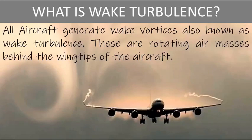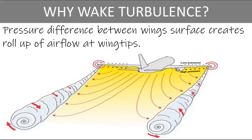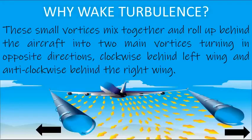Wake turbulence is a byproduct of lift. Low pressure on top of the wing and relatively high pressure on the bottom produce lift. The air mass leaves at the wing tip — the higher pressure on the bottom goes around the tip and gets drawn into the lower pressure on top of the wing. These small vortices mix together and roll up behind the aircraft into two main vortices turning in opposite directions: clockwise behind the left wing and anti-clockwise behind the right wing.